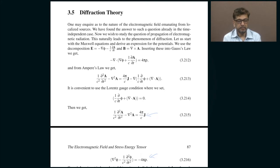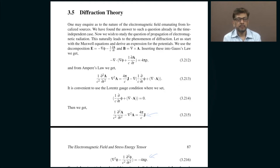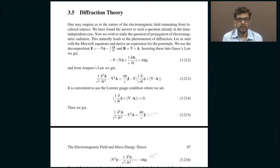These two phenomena tell you that waves typically bend around obstacles; they do not go in the same direction — if there is some obstacle, the wave kind of bends around it. Intuitively speaking, that is what it is. We want to have a more quantitative understanding of what that really means, which is why you need a theory of diffraction, because physics is all about making quantitative statements, not just subjective qualitative statements.